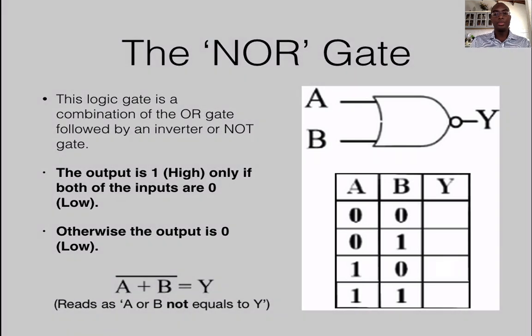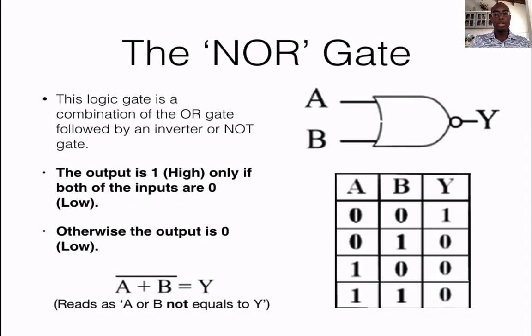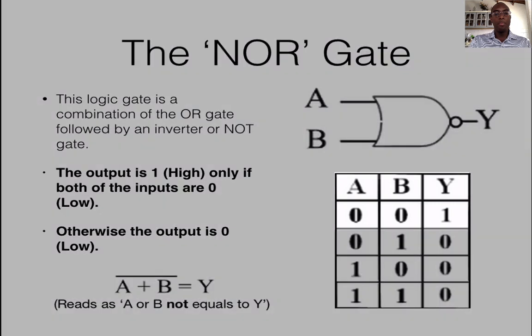So looking at our truth table, 0, 0 should give me a 1. 0, 1 should give me 0. 1, 0 should give me 0. And 1, 1 should give me 0. So in other words, you will only have a high output when both of your inputs are 0.